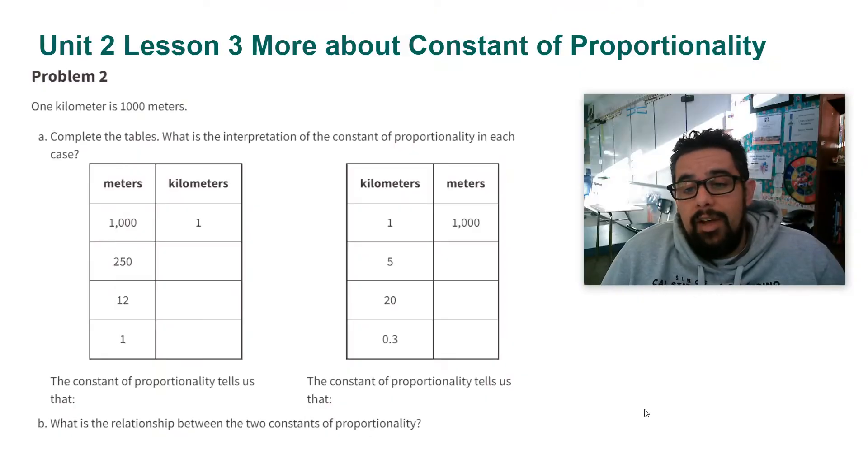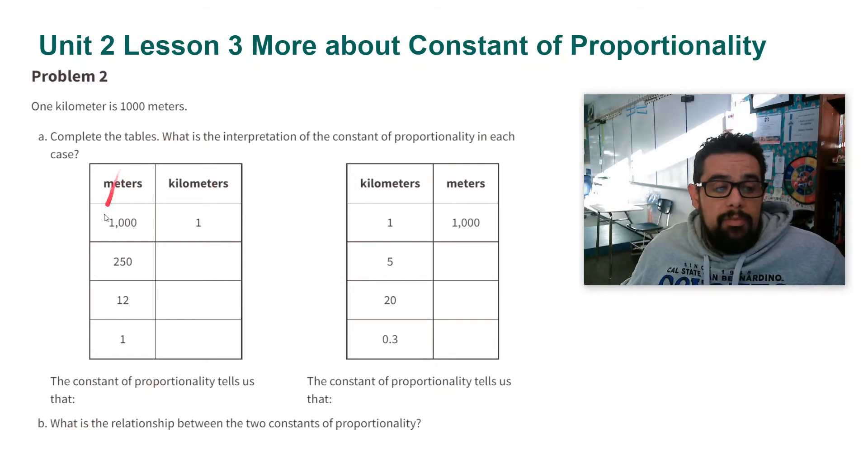One kilometer is a thousand meters. Complete the tables. What is the interpretation of the constant of proportionality in each case? So here in this table we have meters and kilometers, and in the other table we have kilometers and meters. The tables are related but they're slightly different.